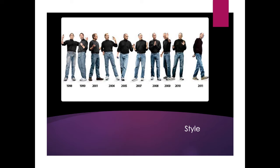The thing to remember about style is that the pattern of choices is recognized and interpreted by the audience — it's not something that's predetermined. We might begin to predict that Steve Jobs is going to show up in sneakers, jeans, and a black mock turtleneck, but we are not necessarily going to know that it's predetermined. Style is kind of like credibility in that it's a lot about the perception of others. A speaker's style is recognized and interpreted by the audience.